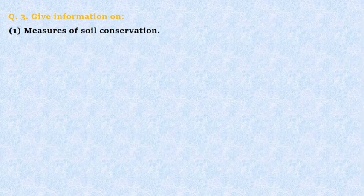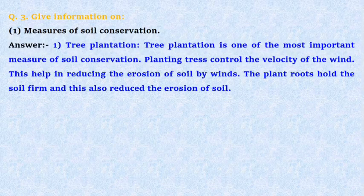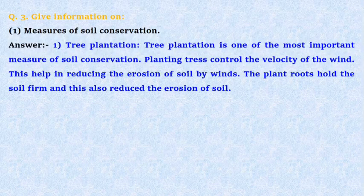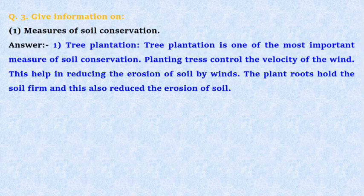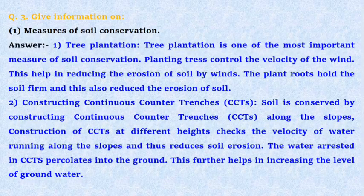Question number 3: Give information on measures of soil conservation. Answer: First, tree plantation. Tree plantation is one of the most important measures of soil conservation. Planting trees controls the velocity of the wind. This helps in reducing the erosion of soil by winds. The plant roots hold the soil firm, and this also reduces the erosion of soil.